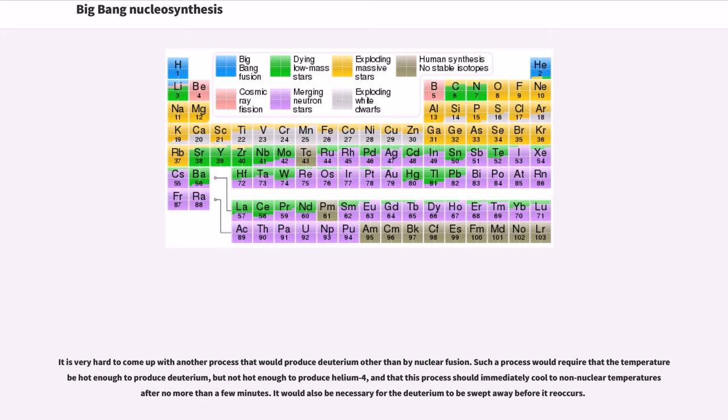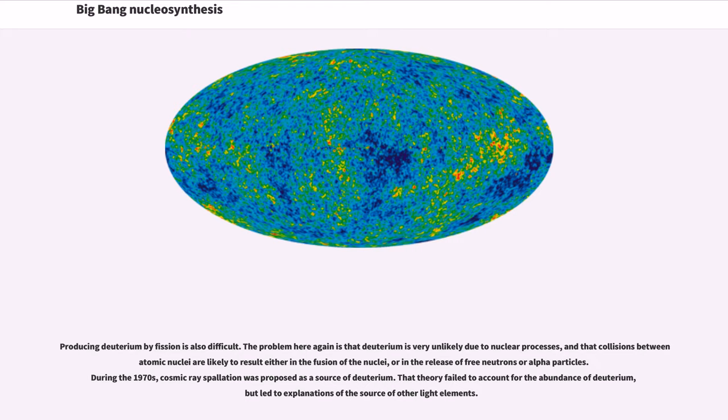It is very hard to come up with another process that would produce deuterium other than by nuclear fusion. Such a process would require that the temperature be hot enough to produce deuterium, but not hot enough to produce helium-4, and that this process should immediately cool to non-nuclear temperatures after no more than a few minutes. It would also be necessary for the deuterium to be swept away before it reoccurs. Producing deuterium by fission is also difficult. The problem here again is that deuterium is very unlikely due to nuclear processes, and that collisions between atomic nuclei are likely to result either in the fusion of the nuclei, or in the release of free neutrons or alpha particles. During the 1970s, cosmic ray spallation was proposed as a source of deuterium. That theory failed to account for the abundance of deuterium, but led to explanations of the source of other light elements.